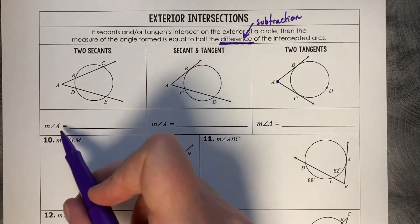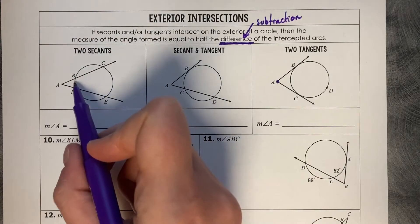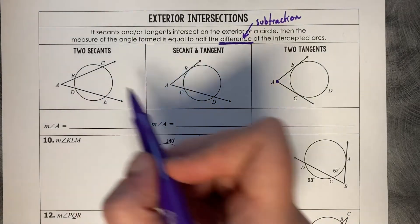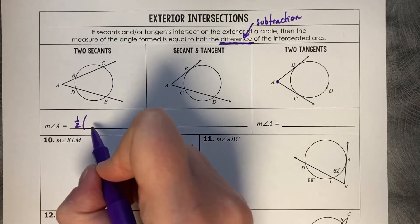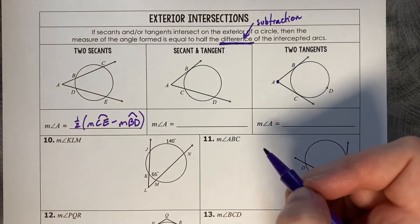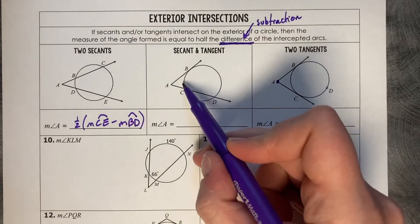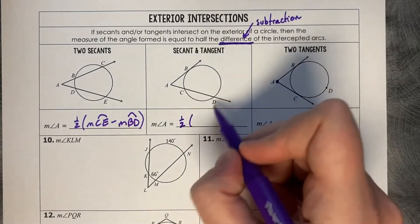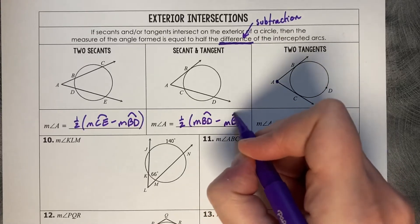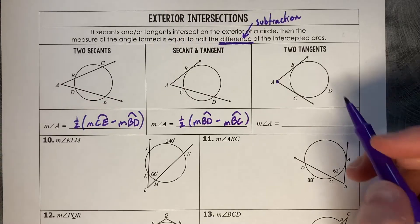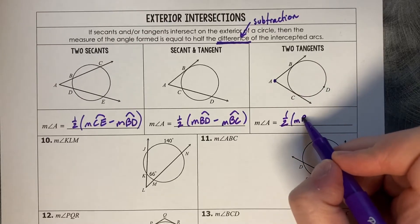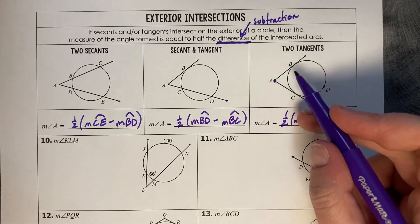Writing the statements for each case. For the measure of angle A with two secants: corresponding arcs are BD and CE, and we subtract — one half the measure of CE minus the measure of BD. For one secant and one tangent: one half of BD minus BC. For two tangents: one half the measure of arc BDC minus arc BC — always big minus small.